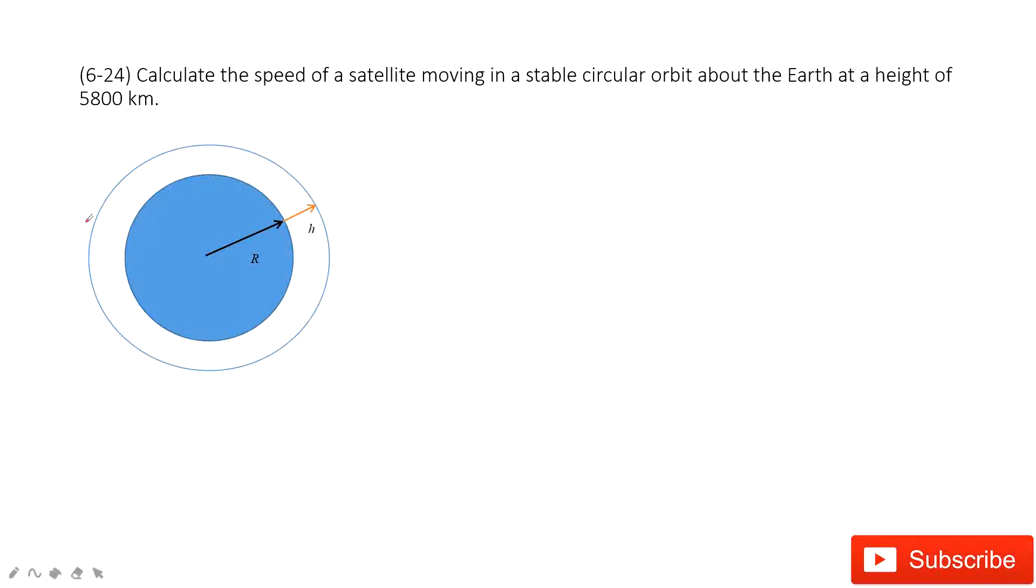We can see for this circular motion, the radius should include two parts: the radius of the earth and also the distance from the surface of the earth to this circle, given as 5800 km. We can find the radius is two parts, r plus h.